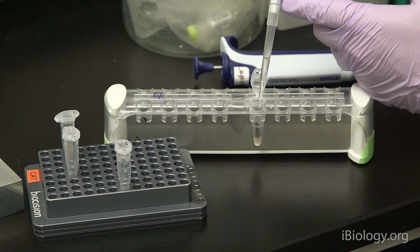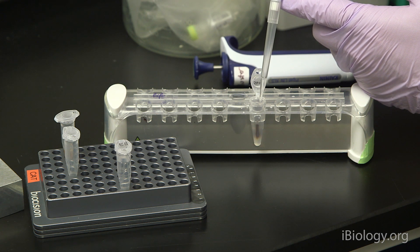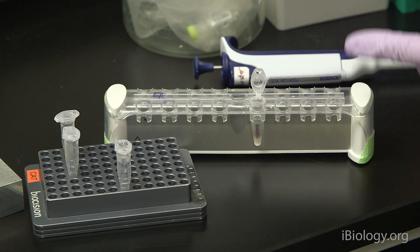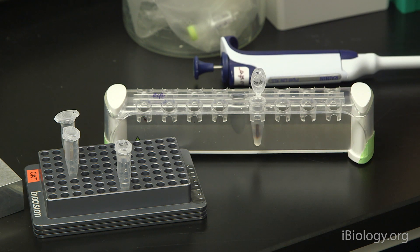You're simply just adding ethanol to the tube while the beads are still stuck to the back of the tube. This is used to wash out any of the residual salt and PEG present around the beads. You want to let this sit for 30 seconds.